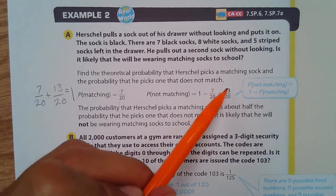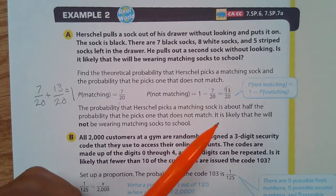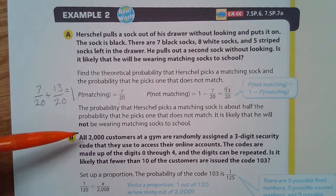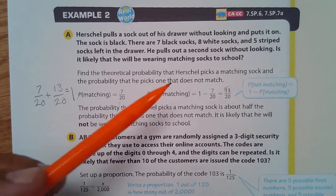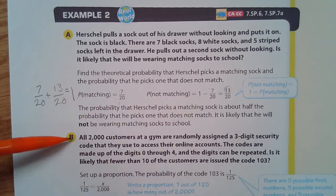It is likely he will not be wearing matching socks to school. I mean, look at this, there's 13 to choose from, and there's only seven that match. So there you go. The probability that Herschel picks a matching sock is about half. It is likely he will not be wearing matching socks to school.